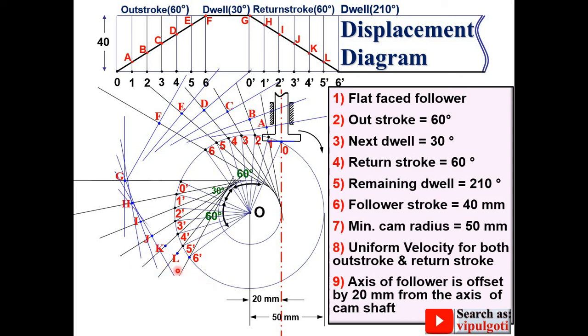This extra work is only for the flat face follower. If it is knife edge follower, then it is not required to draw these extra blue lines. Now draw the smooth curve which will be tangent to all these blue lines. And then from 6 dash to 0, you can use the compass. Don't waste time for freehand sketch from 6 dash to 0, instead use the compass. So this is your cam profile.